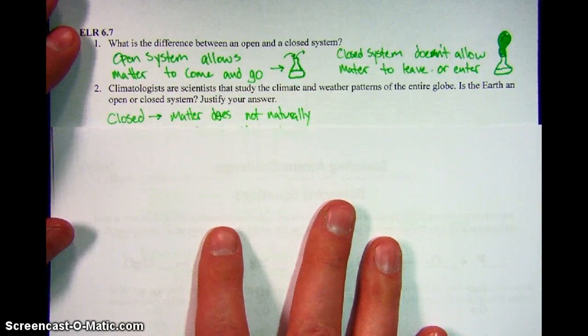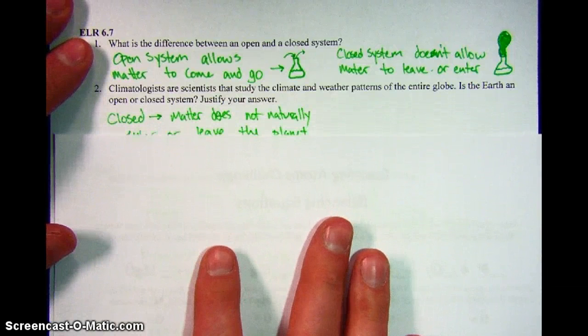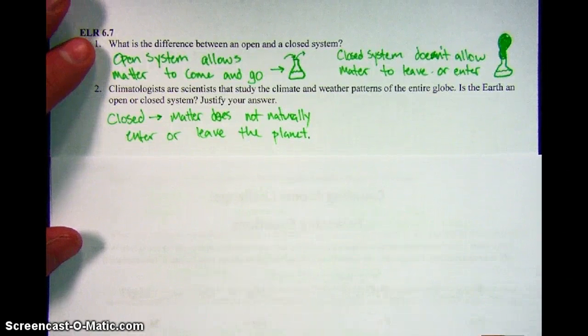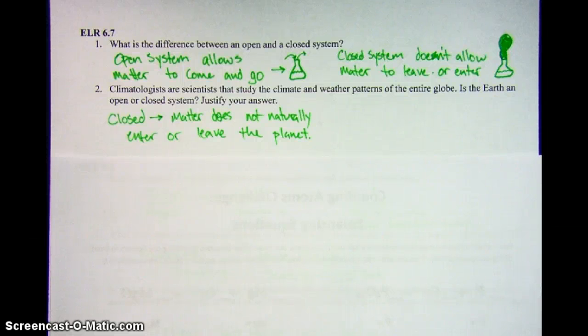I would argue that the Earth is a closed system because matter does not naturally leave or enter our planet, with the few exceptions of things like asteroids. So in a normal day, the Earth would be classified as a closed system just because our atmosphere stays here, all of our materials, all of our matter stays here.